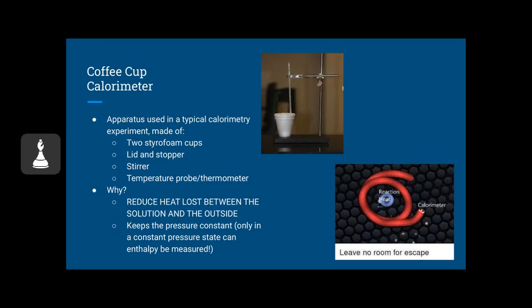Alright, so our calorimeter is what we're going to use to measure it. It's going to be made of two styrofoam cups with a lid and a stopper, and a stirrer, and the thermometer, obviously, to measure this temperature. The reason we have two styrofoam cups and we have to keep the lid on and stop it is to reduce the heat loss between the solution and the outside. Then we can measure accurately what's happening within the cup, the reaction. We also need to keep the pressure constant, because only in a constant pressure state can the enthalpy be measured. Even though we can't keep the heat lost completely, we can keep the pressure constant.